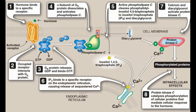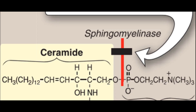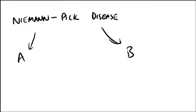Niemann-Pick disease types A and B is an autosomal recessive disease caused by the inability to degrade sphingomyelin. The deficient enzyme is sphingomyelinase, which is a type of phospholipase C. The liver and spleen are the primary sites of lipid deposits and are therefore tremendously enlarged. Infants with this lysosomal storage disease experience rapid and progressive neurodegeneration as a result of deposition of sphingomyelin in the central nervous system, and they die in early childhood.